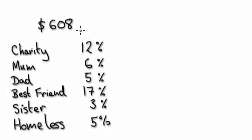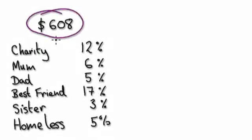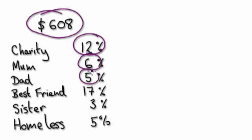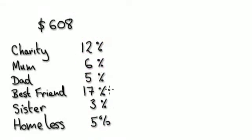Now it's your turn to have a go. Let's say you've got this amount of money. You're going to give 12% to your charity, 6% to your mom, 5% to your dad, 17% to your best friend, 3% to your sister, and 5% to a homeless person. The first question is: how much money will be left for you?